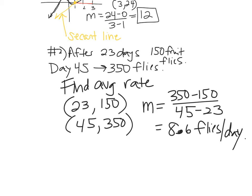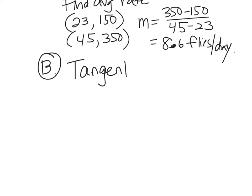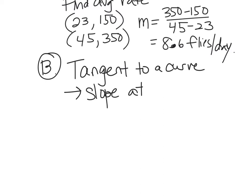That shouldn't be new — it's just slope, like you've done in Algebra 1, Algebra 2, and Advanced Math. Now here comes the new stuff. We're going to find something called the tangent to a curve. The tangent tells us what the slope is at exactly one point — and we've never done that before. We've always needed two points to find slope.